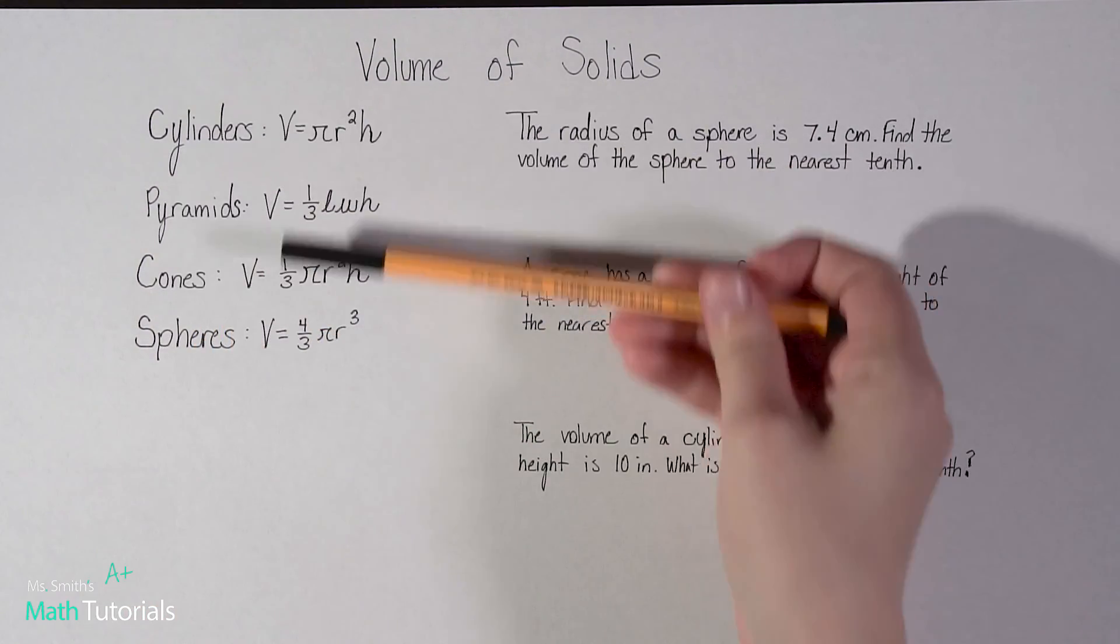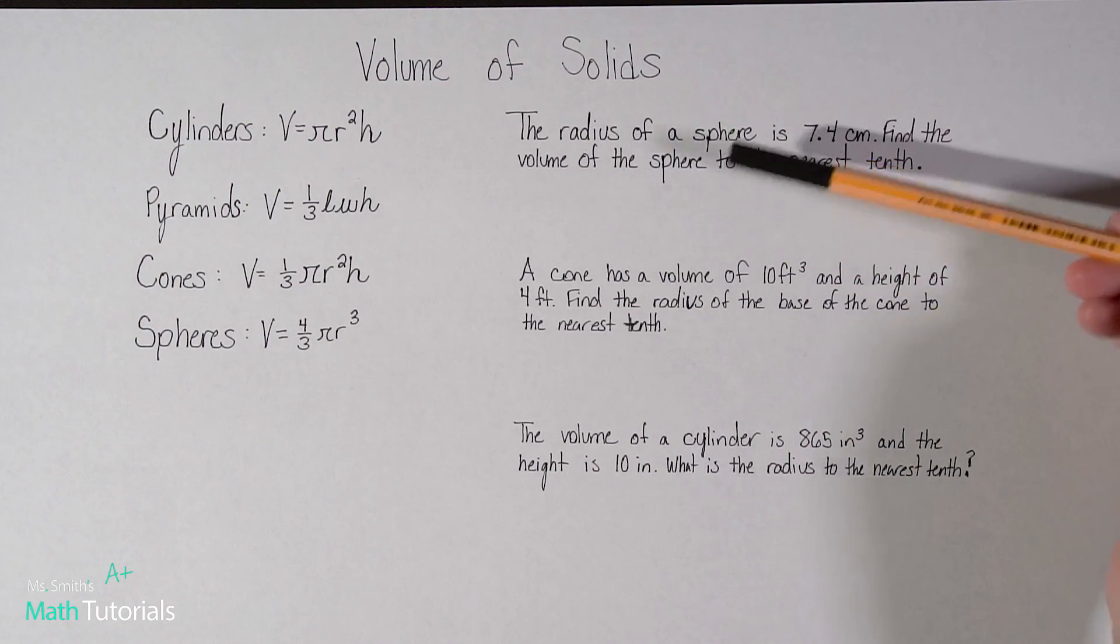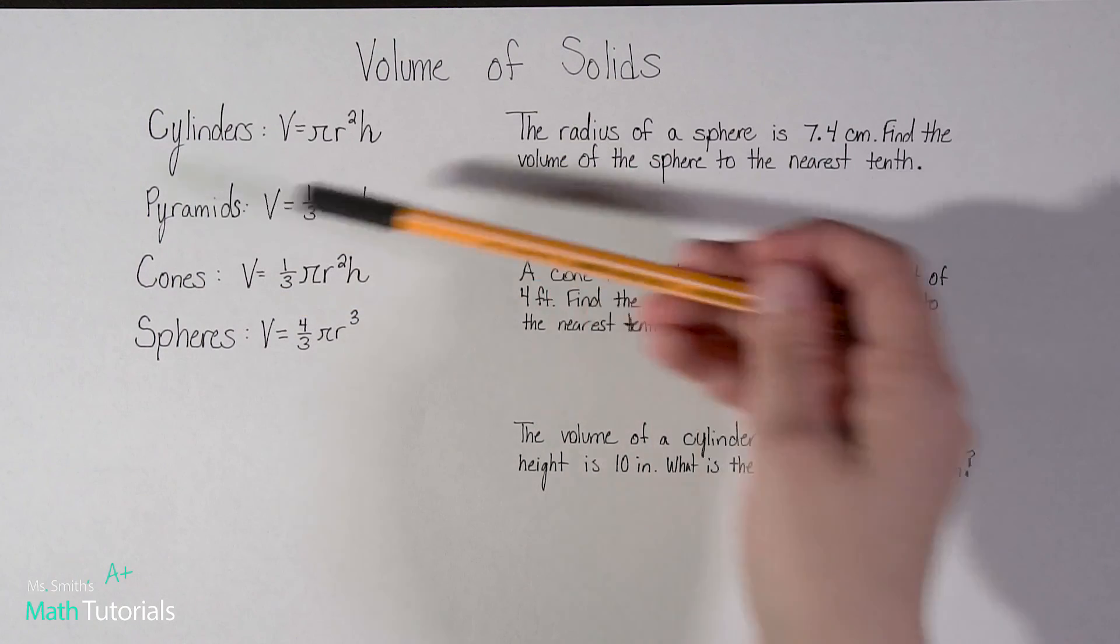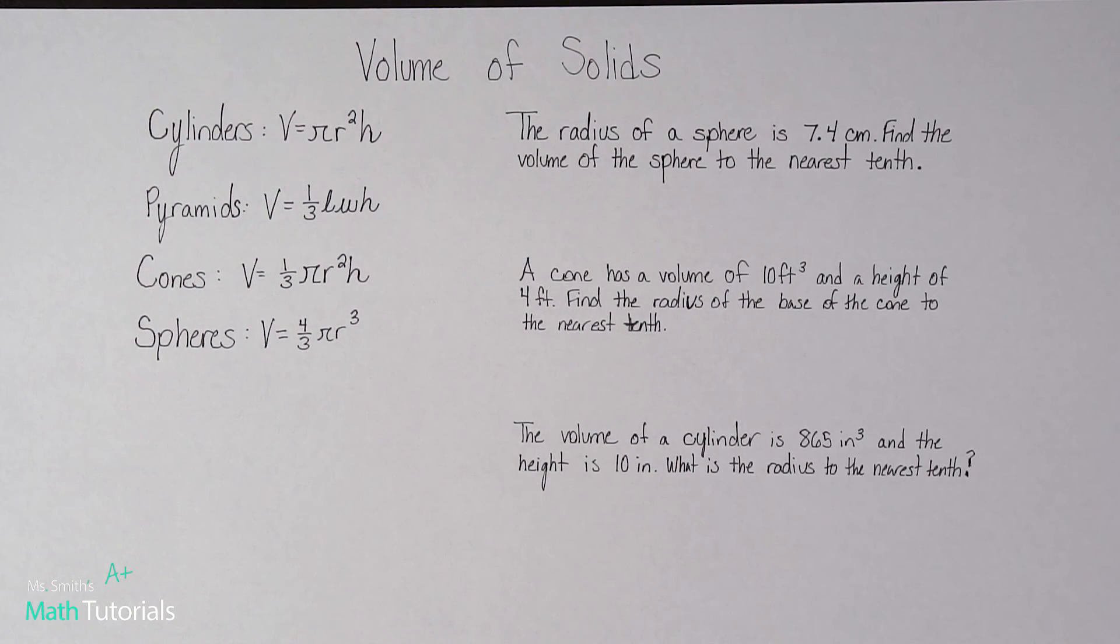I've listed just some common ones here that are frequently asked. We're only going to look at sphere, cone, and cylinder. We're not going to do a pyramid example, but I wanted to throw it on here just so you can refer back to it if you need to. So let's just dive right in to see how this works.